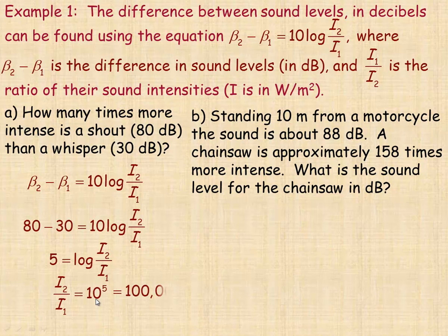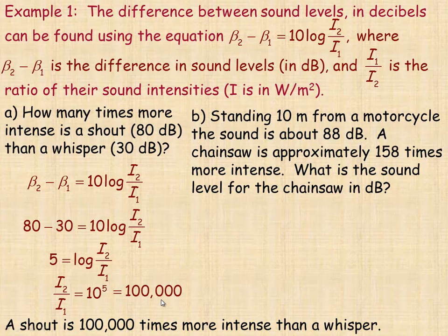And so 10 to the fifth is 100,000. So the ratio, or how many times more intense the shout is than the whisper, it's 100,000 times more intense in terms of the number of watts per square meter.